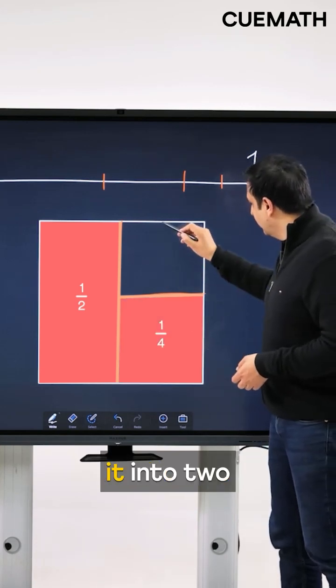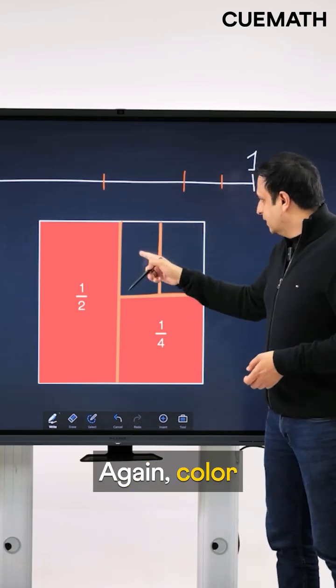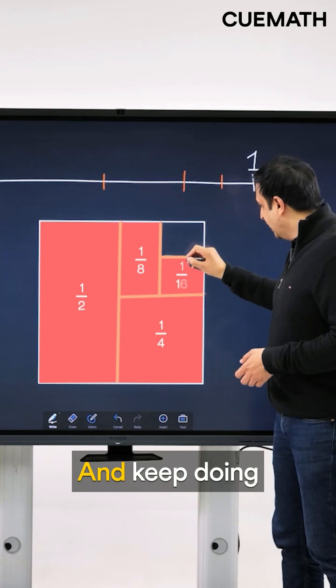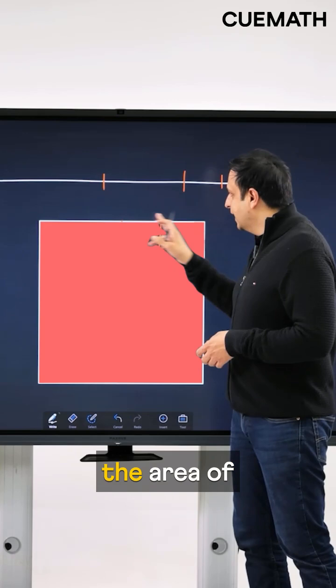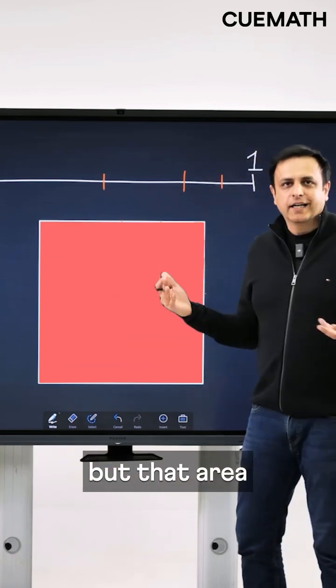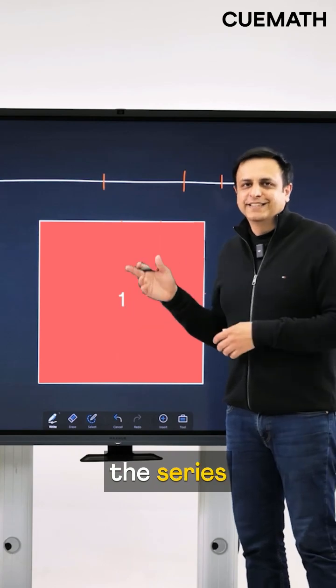Now take this remaining part, divide it into two equal parts again, color this red. This would be 1 over 8 and keep doing this over and over again. So now when you add up all the red parts, what do you think you will get? You will get back the area of the square again, but that area is 1. So the sum of the series should be 1.